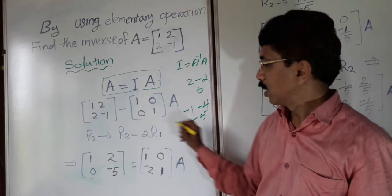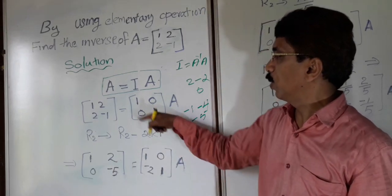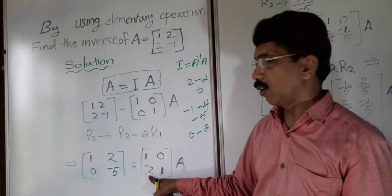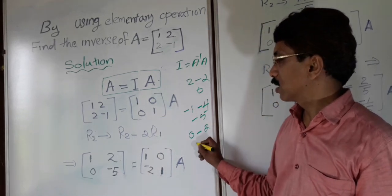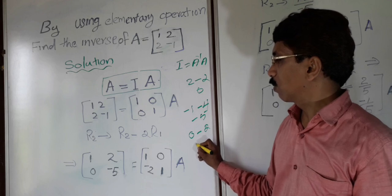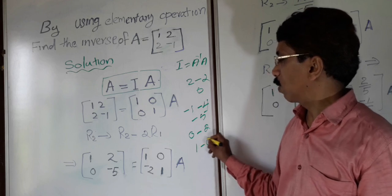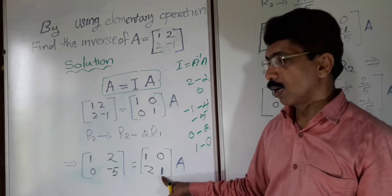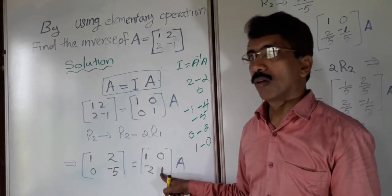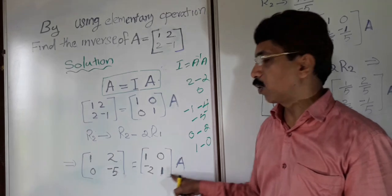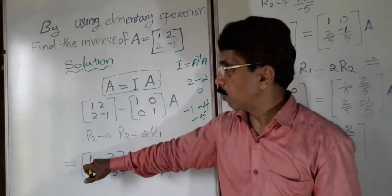Here, I am also applying: 0 changes to 0 minus 2 into 1, that is negative 2. 1 changes to 1 minus 2 into 0, which is 1 minus 0, which is 1. So I applied and I made the equation like this way. I got here 1, here 0.